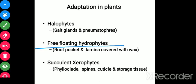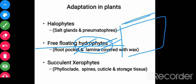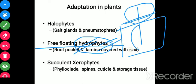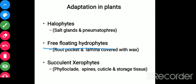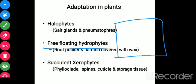Now let's look at free-floating hydrophytes. Hydro means water and phyte means plant, so hydrophytes are plants that grow in water. When a plant freely floats on the water surface, we call it a free-floating hydrophyte. If partially floating with part of the plant submerged, another term applies, and if fully submerged, yet another term is used. For free-floating hydrophytes — for example Eichhornia — the plant floats on the water surface.